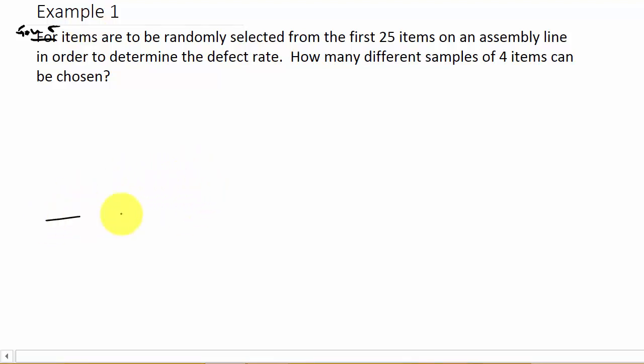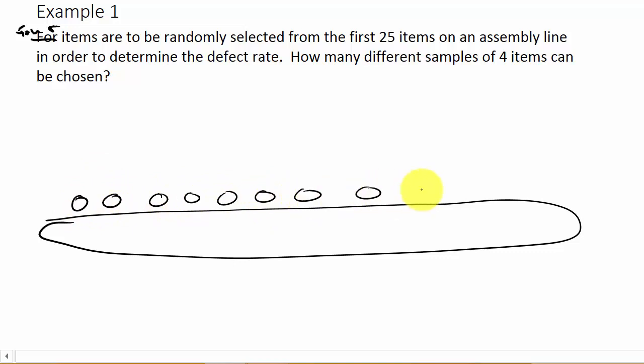Let's suppose you've got your assembly line here—it's on a belt or something and you've got all these items on there. Let's just label them A, B, C, D, E, F, G, H. These are your items. I know I didn't do 25 of them, but we're going to select four of them and I'm going to check them to see if they're defective.